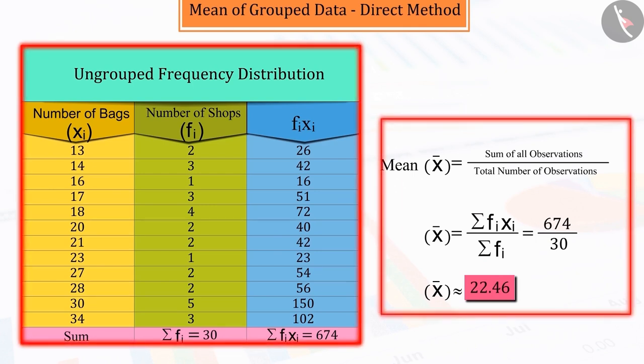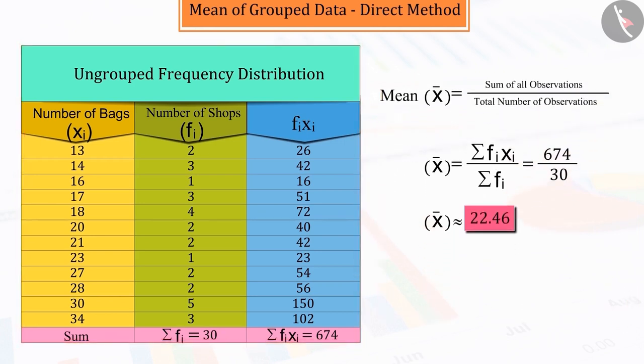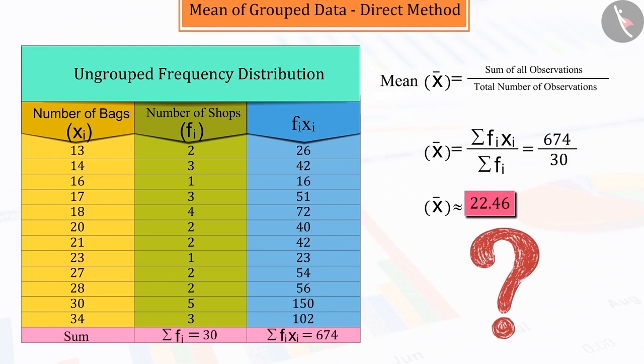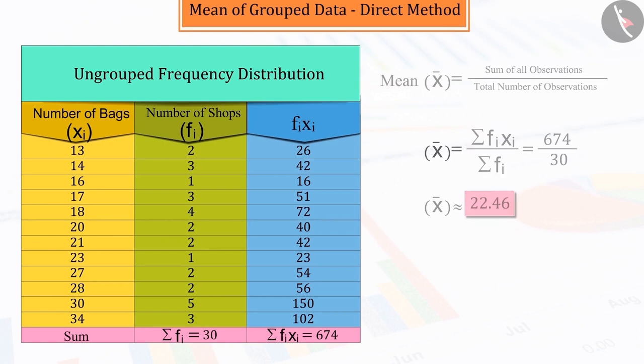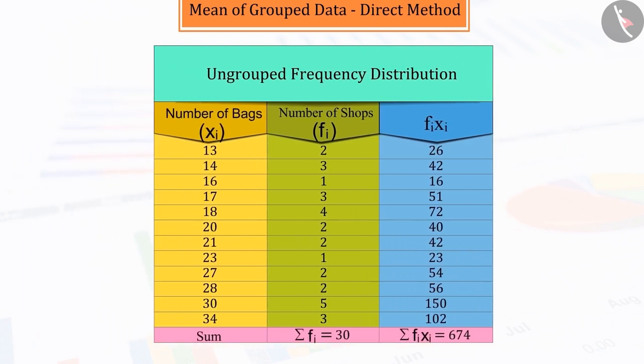But note that this method is useful only when you have small data in daily life situations. But can you tell what approach we need to adopt when the number of data is very high? Let's try to understand with the help of the above example. Since the amount of data is huge, we classify the ungrouped data into groups and thus reduce their size.